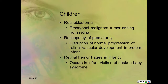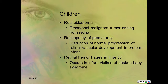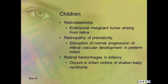In children: retinoblastoma is a malignant tumor arising from the retina starting in the embryo—it's where you get the white pupil instead of a red reflex. Retinopathy of prematurity is a disruption of normal retinovascular development in preterm infants, particularly common in babies around one to two pounds. Retinal hemorrhages in infancy occur in victims of shaken baby syndrome—the head snaps back and forth causing a concussion in the eye, often resulting in permanent brain damage or death.